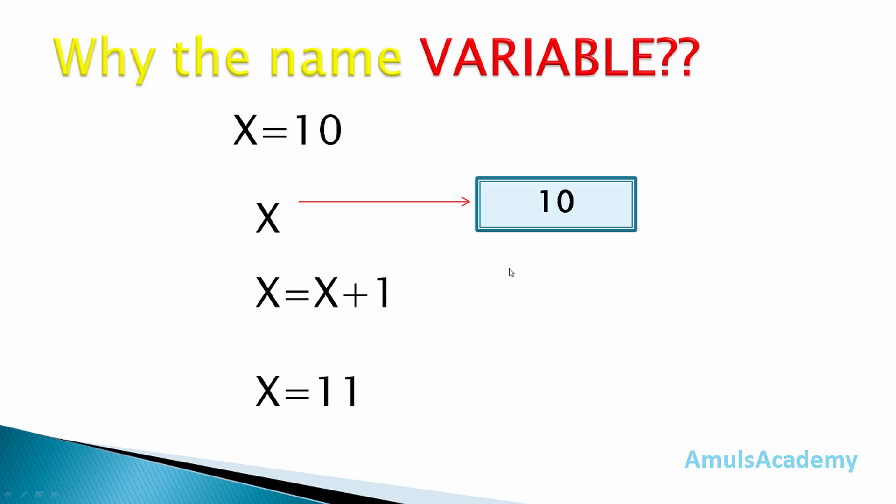Now, why the name variable? Why do we call these variables? It's because, as the name indicates, they're not constant—they keep changing. For example, x = 10 doesn't mean that x will always be 10. It can be changed. Here, x = 10 means x is now holding the value 10.